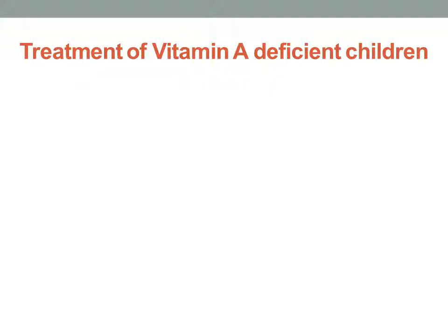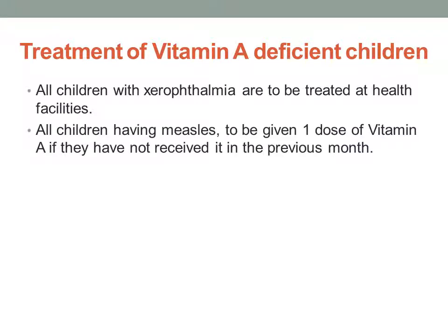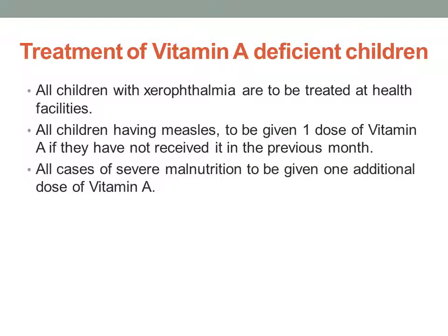The next strategy is treatment of vitamin A deficient children. All children with xerophthalmia are to be treated at health facilities. Any child showing signs and symptoms of vitamin A deficiency must be immediately referred to a healthcare center. All children with measles should be given one dose of vitamin A if they have not received it in the previous month. All cases of severe malnutrition should be given one additional dose of vitamin A.